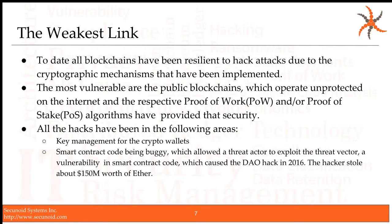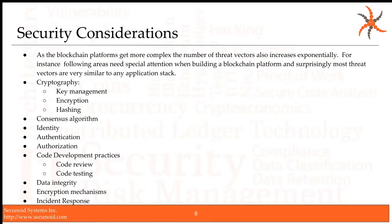In a real use case, what one has to look for in a blockchain from a security perspective are things that any security practitioner would examine in any deployment. As the blockchain platform gets more complex, the threat vectors also increase exponentially. We need to focus on these areas: cryptography, consensus algorithms, identity, authentication, authorization, code development practices, data integrity, encryption mechanisms, and incident response.